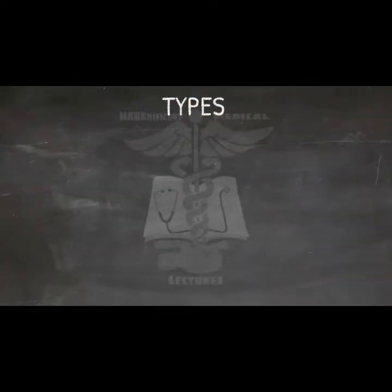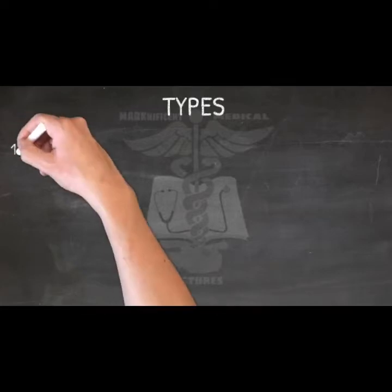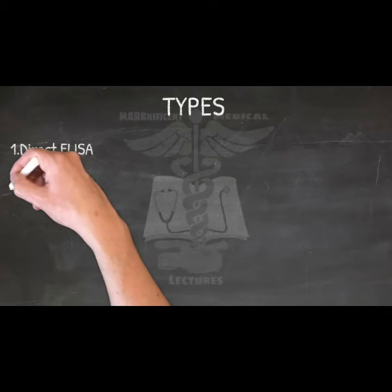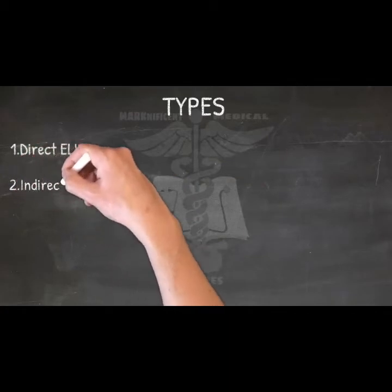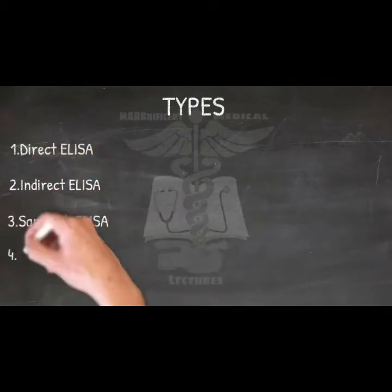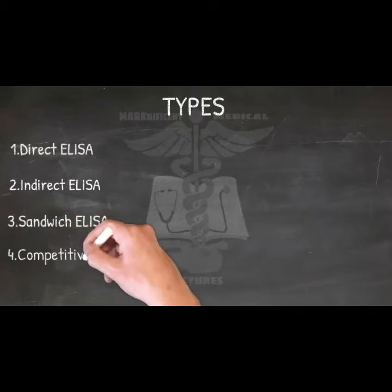Types. Different types of ELISA tests are available for the detection and quantitation of either the antigen or antibodies in serum and other body fluids. These include: 1. Direct ELISA, 2. Indirect ELISA, 3. Sandwich ELISA, and 4. Competitive ELISA.